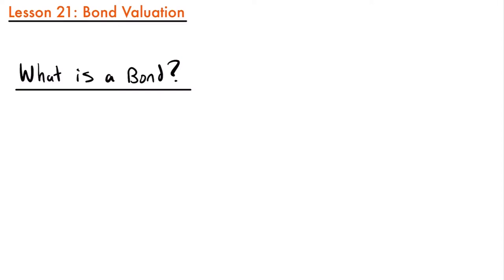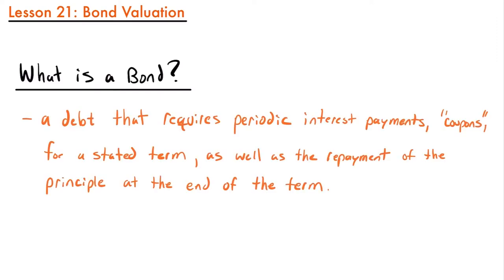An obvious question would be: what is a bond? What is this thing that we are going to be valuating? Bonds are very similar to loans in that they are a way to borrow money for a certain period of time. More specifically, a bond is a debt that usually requires some periodic interest payments that we call coupons for a stated term, and then it also requires the return of the principal or the original amount borrowed at the end of the term.